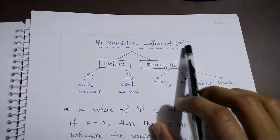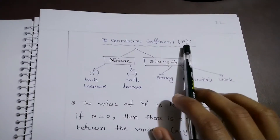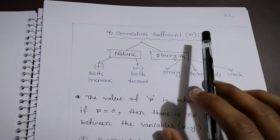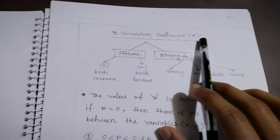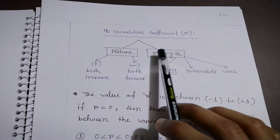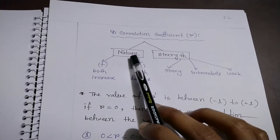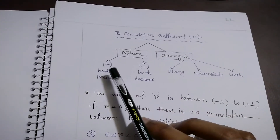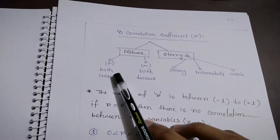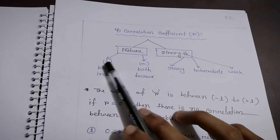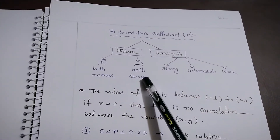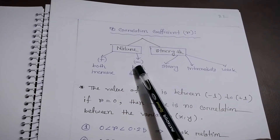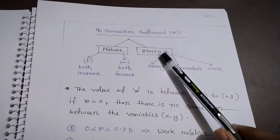Now, the correlation coefficient r is also very important. It tells us how strong the correlation or relationship actually is. There are two aspects: nature and strength. Nature refers to whether x and y are both increasing (positive) or both decreasing (negative). Strength refers to how strong that relationship is.